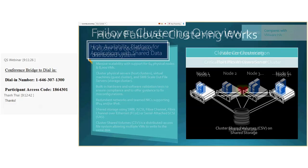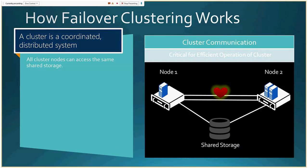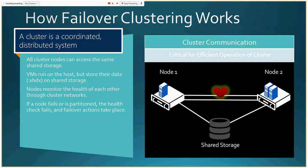Here's how failover clustering works: the different nodes communicate through heartbeat packets. They all access the same shared storage where the state information about running virtual machines is stored — execution happens on the hardware, but the information they work with is on shared storage. Virtual machine files, now called VHDX instead of VHD, use XML config files that are easier to read and edit. Nodes on the cluster are aware of each other through the heartbeat packet, and you should have a dedicated network for heartbeat traffic.